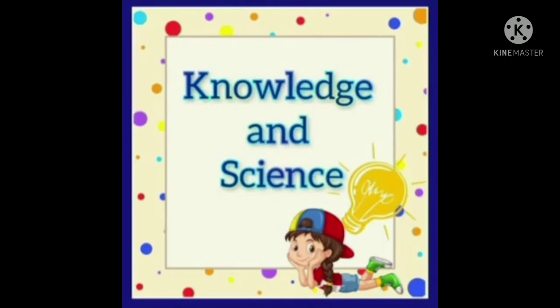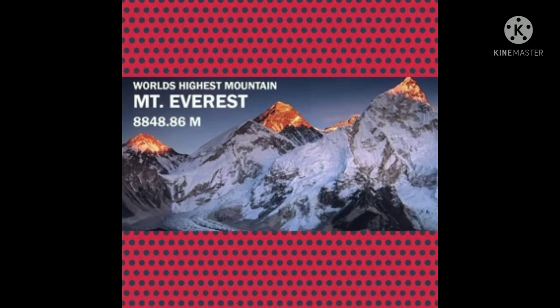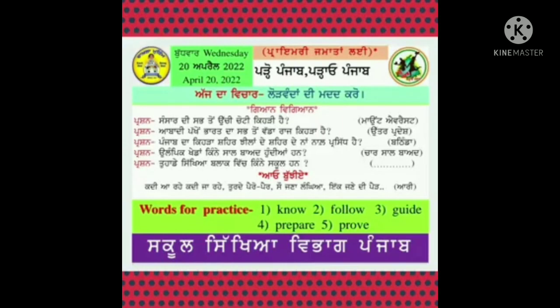Knowledge and Science. First question: Which is the highest peak of the world? ਸੰਸਾਰ ਦੀ ਸਭ ਤੋਂ ਉੱਚੀ ਚੋਟੀ ਕਿਹੜੀ ਹੈ? Its answer is Mount Everest. Question number 2: Which is the largest state of India in terms of population? ਅਬਾਦੀ ਪੱਖੋਂ ਭਾਰਤ ਦਾ ਸਭ ਤੋਂ ਵੱਡਾ ਰਾਜ ਕਿਹੜਾ ਹੈ? Its answer is Uttar Pradesh. Third question: Which city of Punjab is known as the city of lakes? Punjab ਦਾ ਕਿਹੜਾ ਸ਼ਹਿਰ ਝੀਲਾਂ ਦੇ ਸ਼ਹਿਰ ਦੇ ਨਾਮ ਨਾਲ ਪ੍ਰਸਿੱਧ ਹੈ? ਇਸਦਾ ਜਵਾਬ ਹੈ ਬਠਿੰਡਾ।